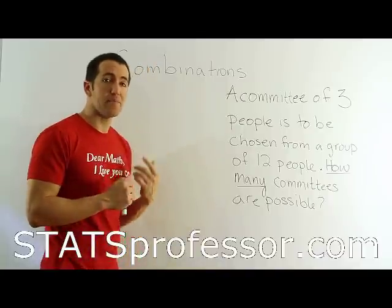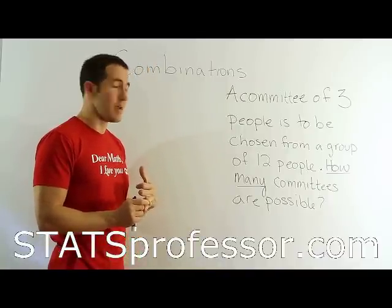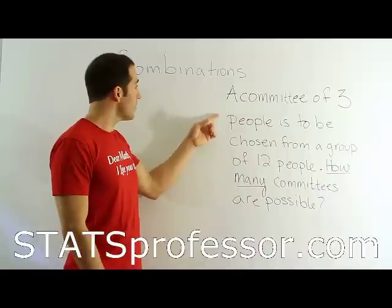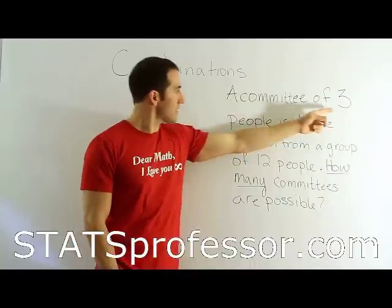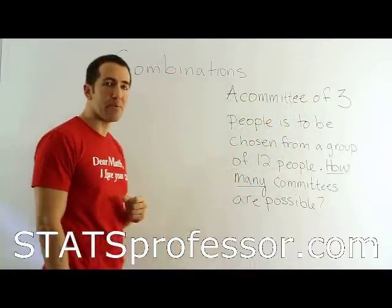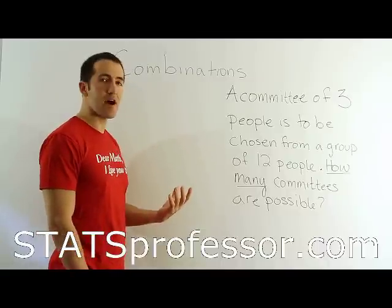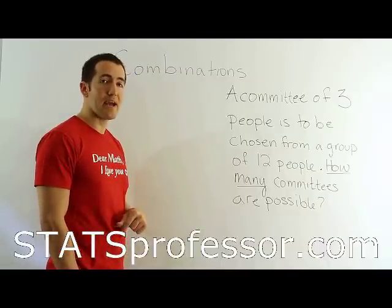Now, I think it might be combinations. I'm looking for there to be a larger set, and then we're going to draw some subset from it. So let's see. It says a committee of three people is to be chosen from a group of twelve people. So we're going to draw this subset of three people from this set of twelve people. And at that point, I think, yes, that meets the idea of a combination.